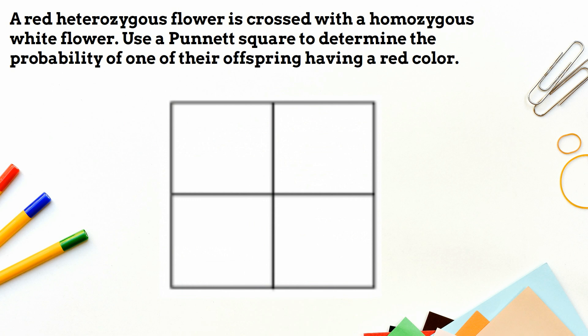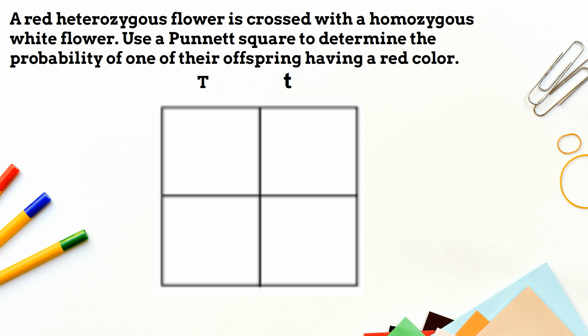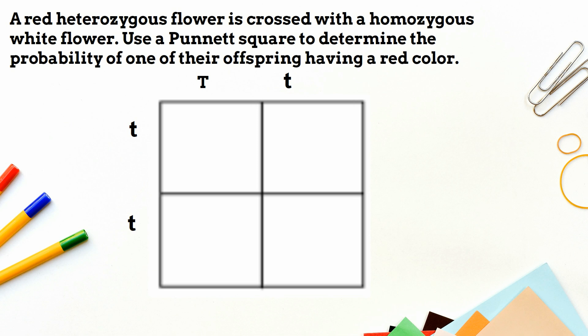I need to look for information in the problem. One flower is heterozygous for red color. I will use the letter T, so I will write a capital letter and a lowercase letter. I still don't know if red or white is dominant or recessive. The next clue tells me because parent 2 is homozygous white. If red flower has a capital letter, then the trait must be dominant. A heterozygous genotype is always a dominant trait. So parent 2 is written as lowercase t, lowercase t, because it must be homozygous for the recessive trait.